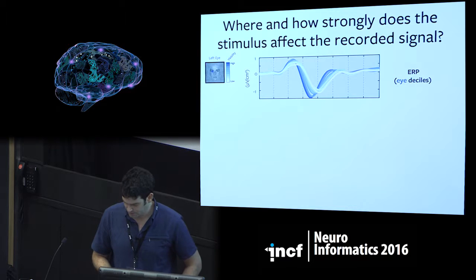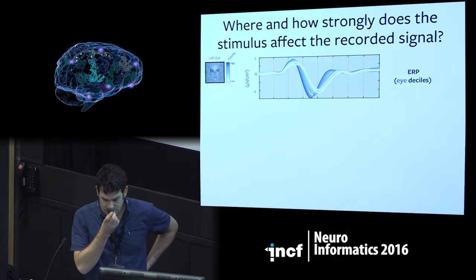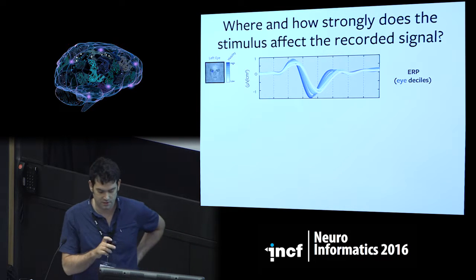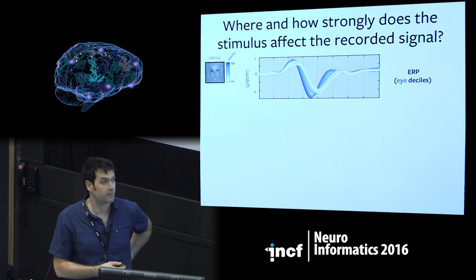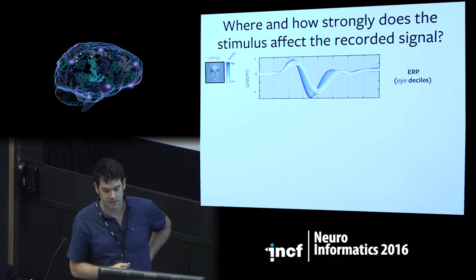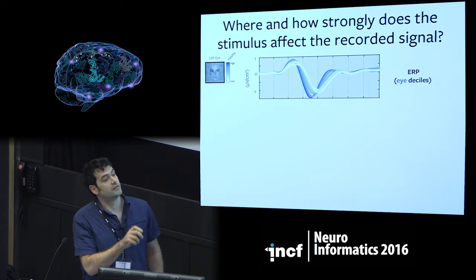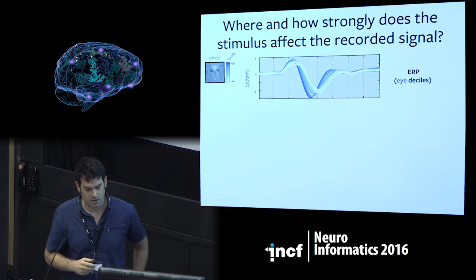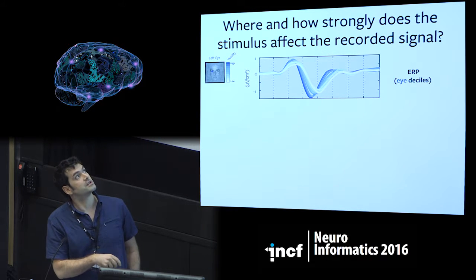Just to set this up: where and how strongly does the stimulus affect the recorded signal? Here's an example of that question. This is EEG data recorded from a single sensor in an event-related design with a stimulus that is some kind of modulated image of a face with a parametrically varying visibility of the left eye. And this is the ERP plotted for different values of that stimulus.